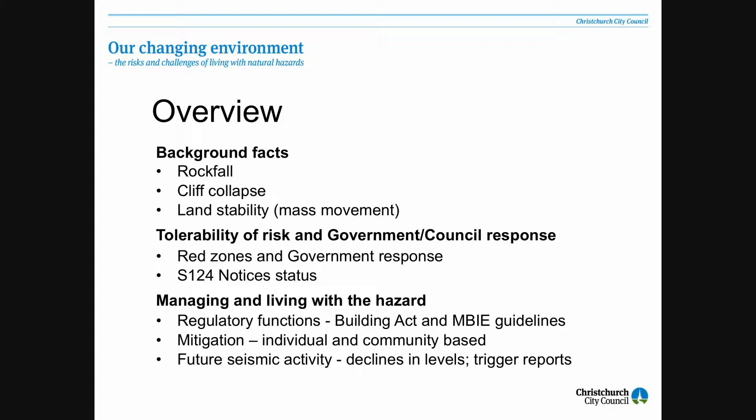I'll run through a quick overview of what myself and Peter are going to talk about. I'm going to concentrate on some of the science behind the slope instability in the Port Hills. We're talking about three types of geohazards: rockfall — the influence of individual rocks falling down hills — cliff collapse, and land instability, which is a catchall name for mass movements, landslides, etc. I'll also touch on the life risk issues that Tony discussed earlier, then hand over to Peter Doolin, who will look at the policy and regulatory framework.